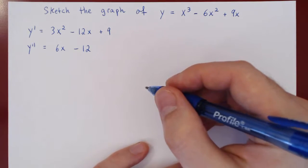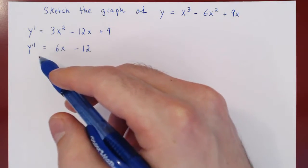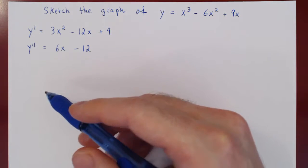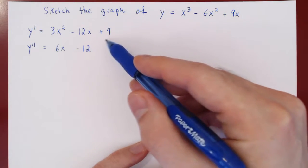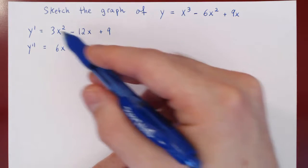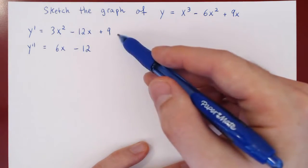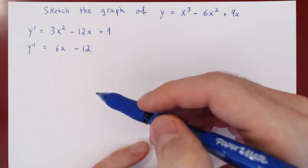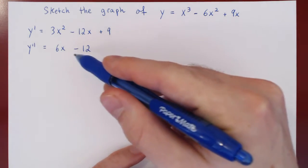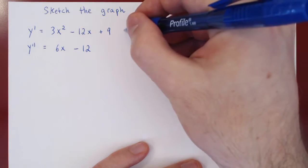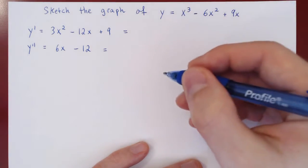Remember that we use the first derivative to find the critical points, and the second derivative to find possible inflection points. Critical points are zeros of the first derivative, or points where the first derivative is undefined. As y prime is a polynomial, it always is defined, so we can only look for possible zeros — and the same goes for the second derivative. When we have a polynomial, we find zeros by factoring.